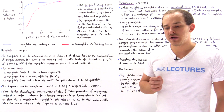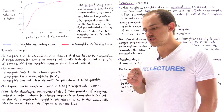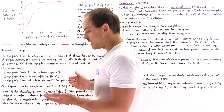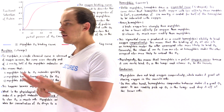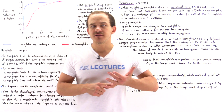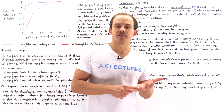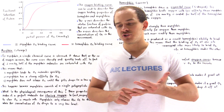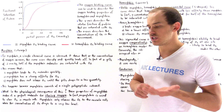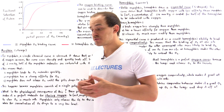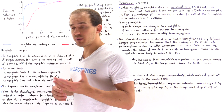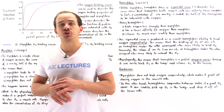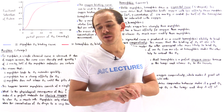Inside our body, we have two different proteins, myoglobin and hemoglobin, that carry out the function of bringing oxygen to the cells of our body, where that oxygen can then be used in a process called aerobic cellular respiration to produce ATP molecules.